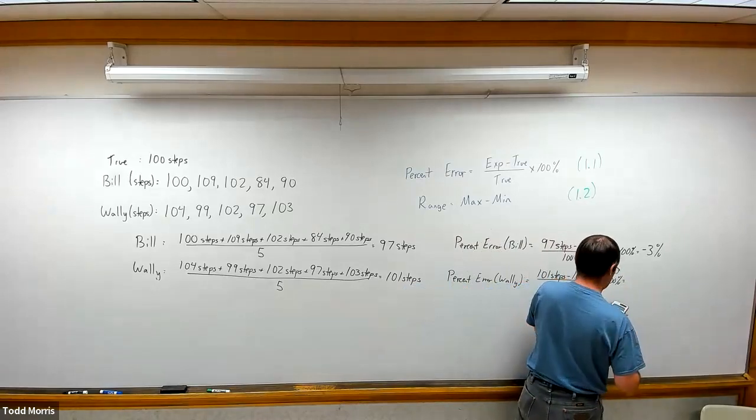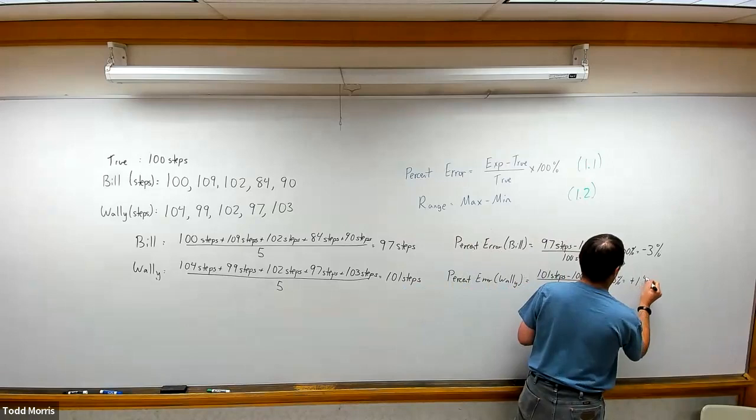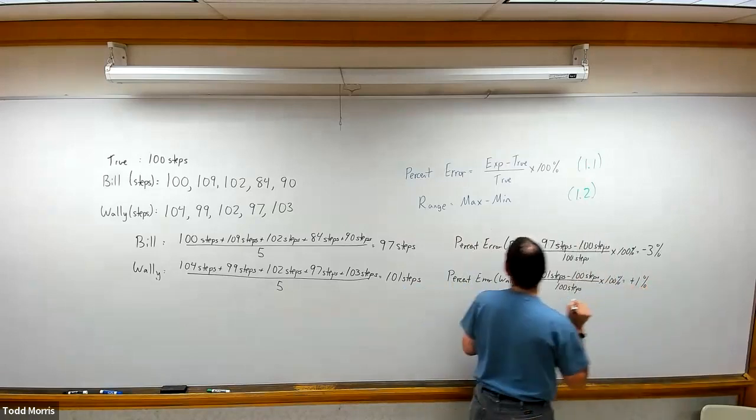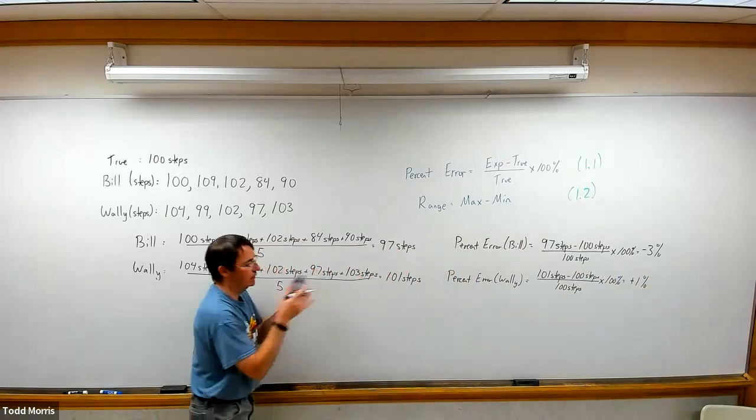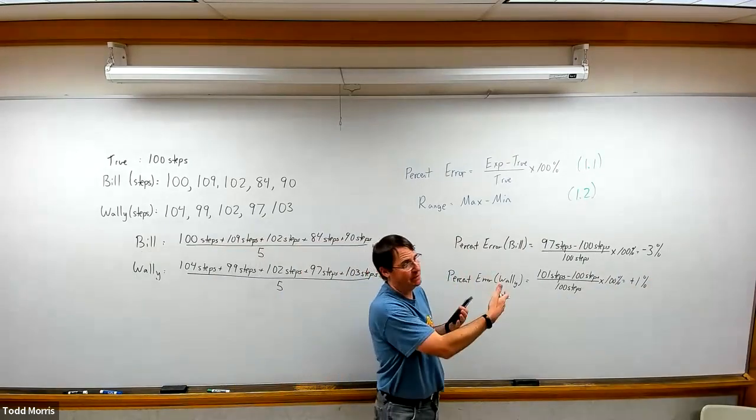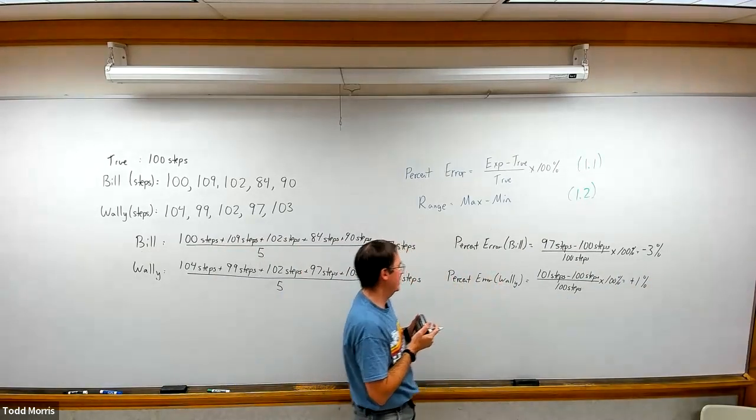Gives us positive one percent error for Wally, which means that on average Wally's fitness tracker was recording about one percent more steps than he actually was taking.